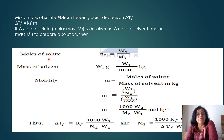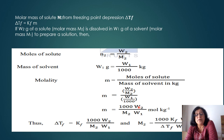To calculate the molar mass of the solute using depression in freezing point: ΔTf = Kf·m. If W2 grams of solute with molar mass M2 is dissolved in W1 grams of solvent, molality m = (1000·W2)/(M2·W1). Therefore ΔTf = Kf·(1000·W2)/(M2·W1), and rearranging gives M2 = (1000·Kf·W2)/(ΔTf·W1).